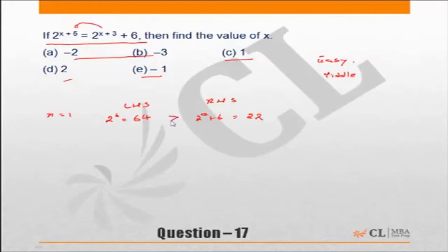So left hand side is greater. What I want to do is reduce the value of left hand side and increase the value of right hand side. To reduce the value of left hand side, I will have to reduce the value of x.